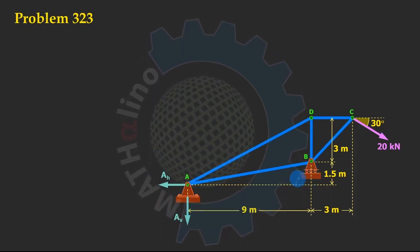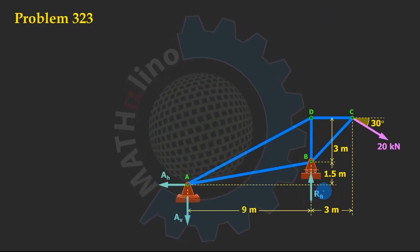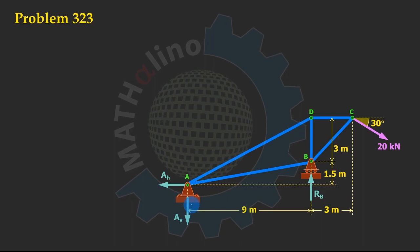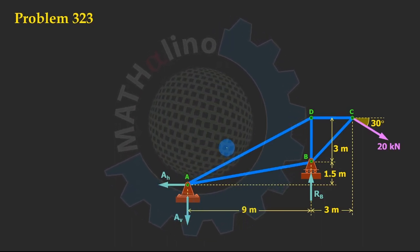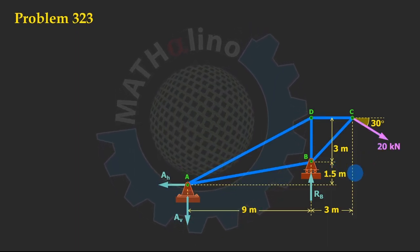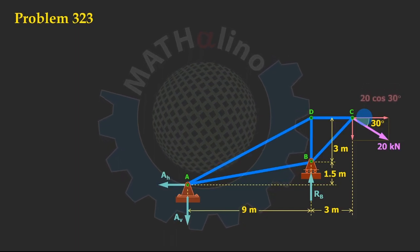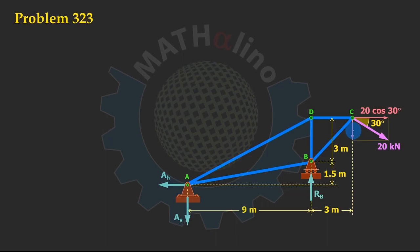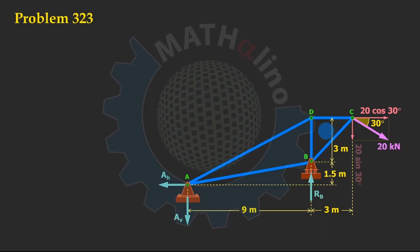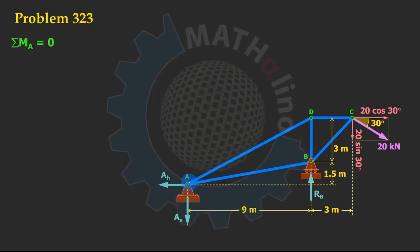This force also has a tendency to compress point B towards the ground, so the reaction at B must be upward. If you made a mistake in finding these directions, don't worry — you will get the same magnitude but of opposite sign; use the absolute value to get the correct answer. Next, we resolve this 20 kilonewton force into components: the horizontal component is 20 cosine 30, and the vertical component is 20 sine 30.